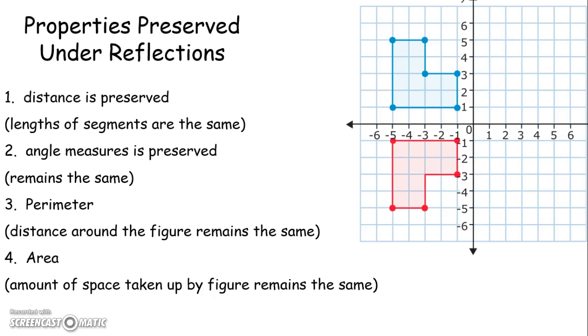So let's just go ahead and be sure we understand the properties that are preserved. First of all, distance is preserved and I showed you that on the last slide. For example, if here this is 2 units, 1, 2 units long, after you reflect it, it will still be 1, 2 units long. That works for all of your line segments when you're reflecting.